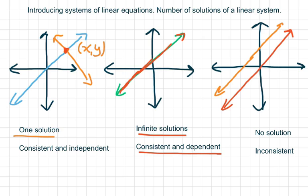And then you can have parallel lines. That means they have the same slope. They never touch. Parallel lines never touch, so there's no solution, and we call that inconsistent.